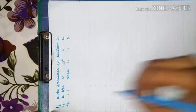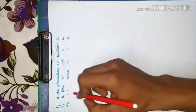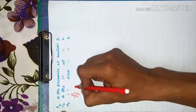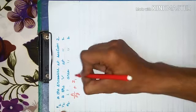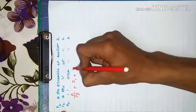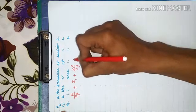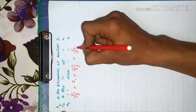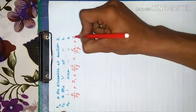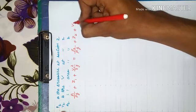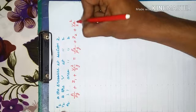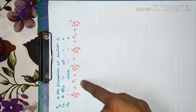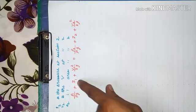Bernoulli's equation is: P1/ρg + Z1 + V1²/2g = P2/ρg + Z2 + V2²/2g. This is the pressure head, this is the datum head, and this is the velocity head.